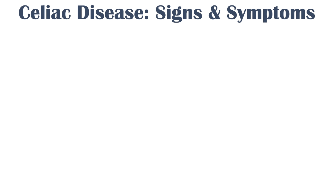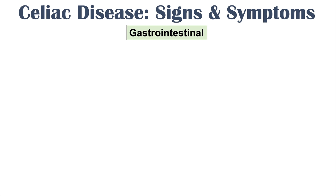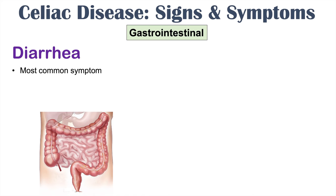Now let's talk about some of the signs and symptoms of celiac disease. Many systems in the body are affected. The main system is the gastrointestinal system. Because of malabsorption, we're going to have issues with diarrhea, which is actually the most common symptom of celiac disease.